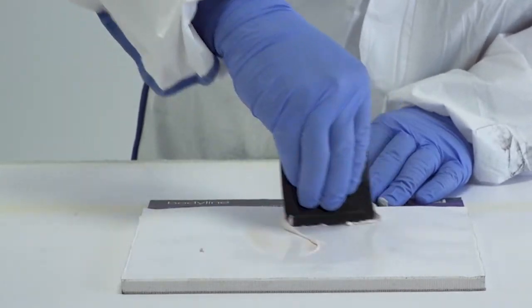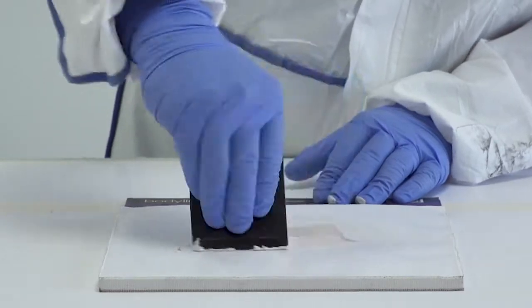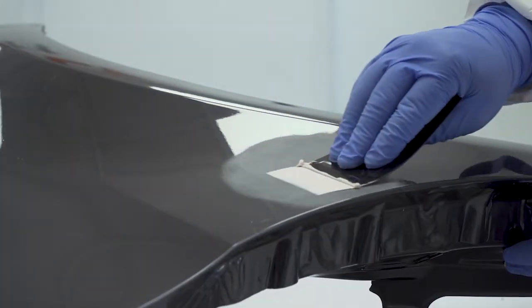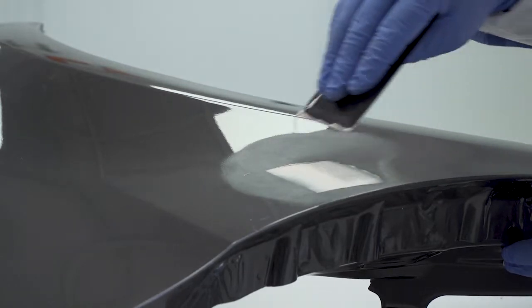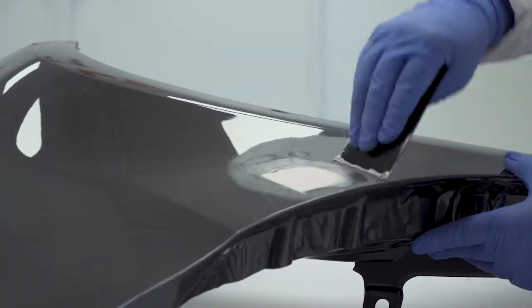Always make sure the hardener has been fully mixed into the filler before commencing the application. Begin the application by wetting up the panel. Apply the filler to the whole surface to be repaired before removing it and placing it back on the mixing board.